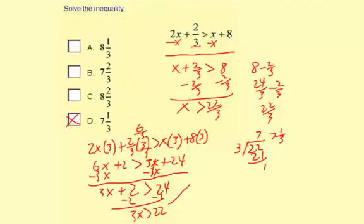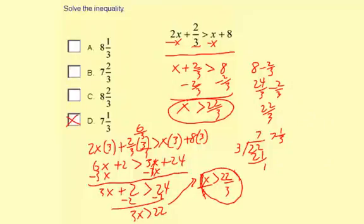Move over here to finish it. 3x greater than 22. Divide by 3. So x is greater than 22/3. So it's the same as we got here. So both processes worked out to have the same answer. And we can take this 22/3 and make it a mixed number and get 7 and 1/3 also. So that's two different ways to solve this inequality.